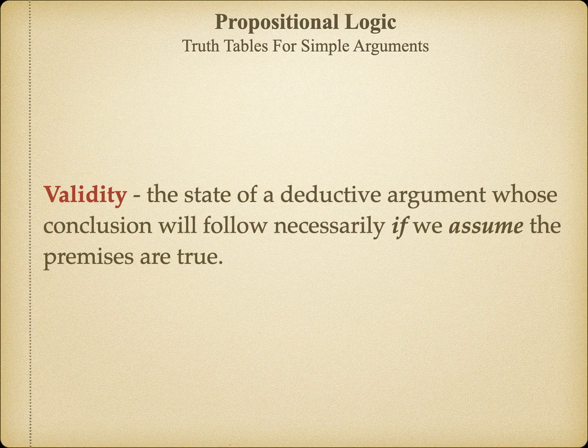Before we begin setting up truth tables for arguments, let's remind ourselves of what we're looking for. Deductive arguments are evaluated on two criteria: validity and soundness. Validity has everything to do with the form of the argument, and soundness has to do with the truth of the premises. When deductive arguments are put together in the right way, they will be successful. But when not, they're fallacious.